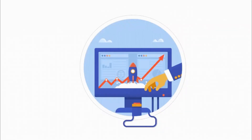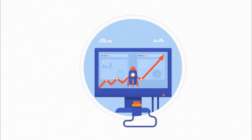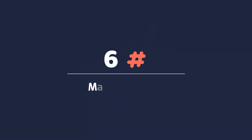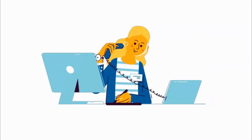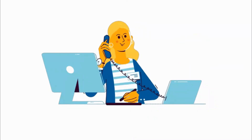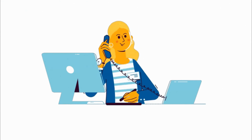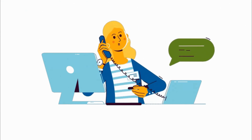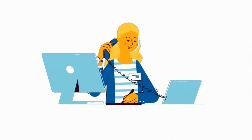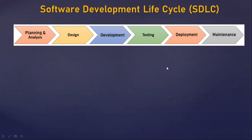Phase five: Deployment. Once UAT is done and the software is found with no bugs or errors, it is deployed to the production environment. Phase six: Operations and Maintenance. If any issues come up or any enhancements are required, they are to be fixed or implemented by the developers.